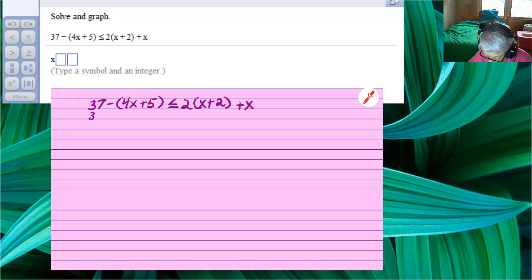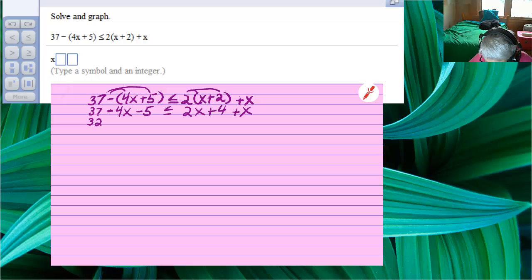I've got 37 minus, I'm going to distribute the minus sign, so I'll have minus 4x minus 5 is less than or equal to, I'm going to distribute the 2. So, 2x plus 4 plus x. Now I have my first line, I'm going to combine my like terms on the left side and my like terms on the right side, just like I would do if I were working on an equation. So we'll have 37 minus 5 is 32 and bring down the minus 4x and that's less than or equal to, 2x plus x is 3x plus 4.